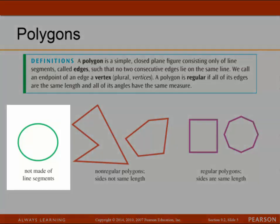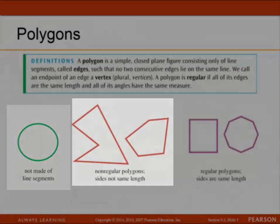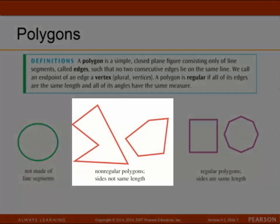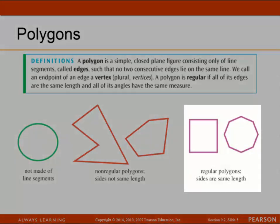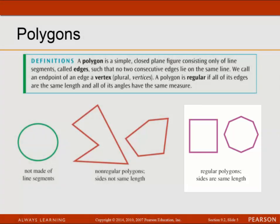The first diagram is not made out of line segments, so therefore it's not a polygon. The second figure shows two non-regular polygons, because they have sides that are not the same length. In the last figure, we have regular polygons — all the sides are the same length and all the angles in the figure are the same.